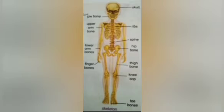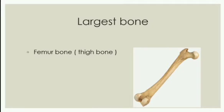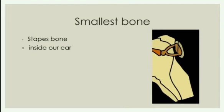Every time we walk, sit on a chair, or bend, we are using our bones. The bone joining our hip and knee is the largest bone in our body. It is called the thigh bone or femoral bone.